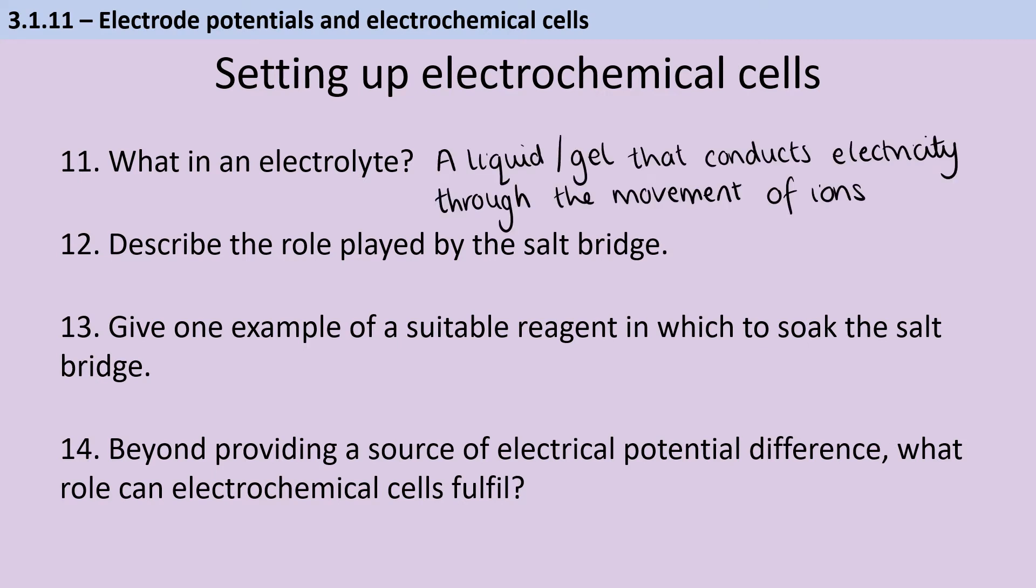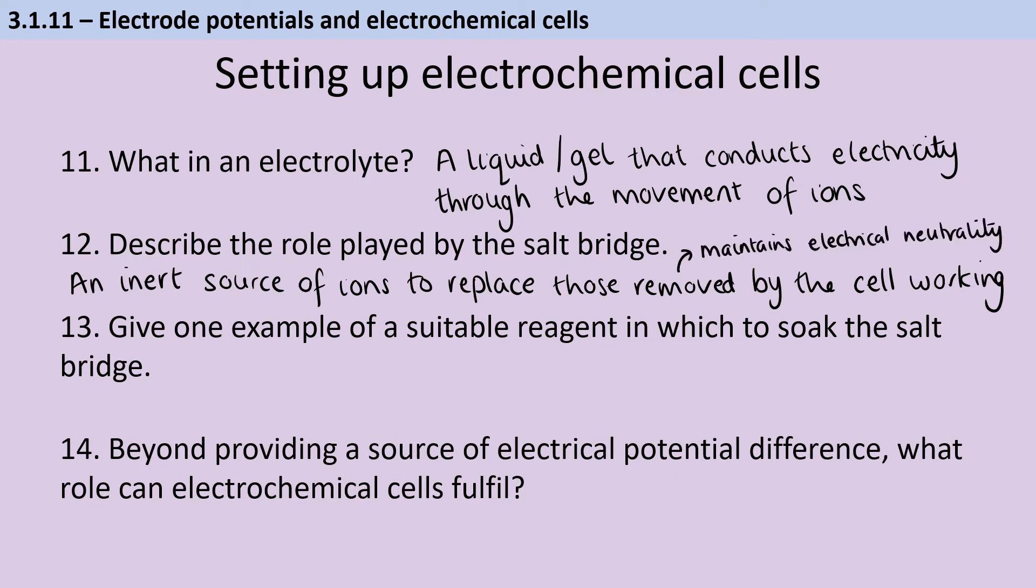In an electrochemical cell, the salt bridge is used to join the two half cells together. And as it does that, it provides a source of ions to replace the ions that are being used up. And this needs to happen because otherwise, the two half cells will become electrically charged. So this maintains the neutrality of the overall cell.